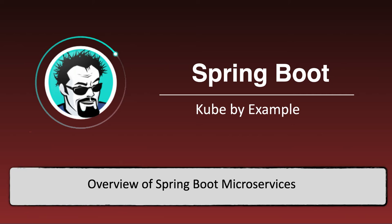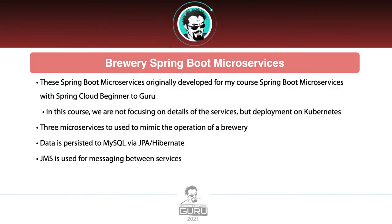In this video we're going to be talking about an overview of the Spring Boot microservices that we are going to be using for our Kubernetes by Example course. I have three Spring Boot microservices originally developed for my course on Udemy, Spring Boot Microservices with Spring Cloud for Beginner Guru. It does cover specifically the development of microservices using Spring Boot and a number of features of Spring Cloud. We're not going to be using everything in that, so we are modifying these. This is the basis of these services.